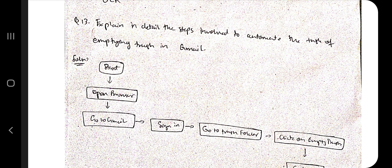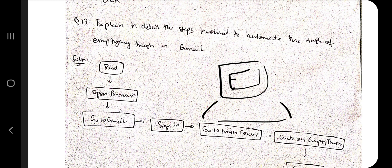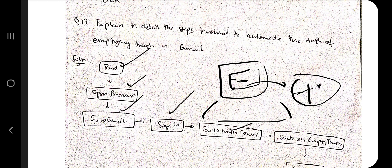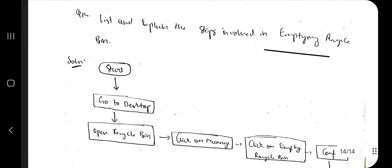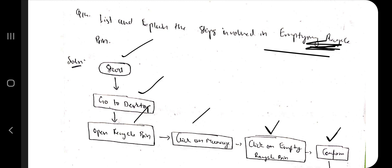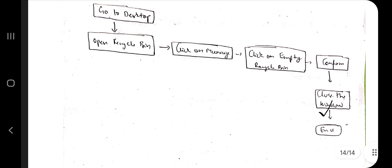The next question involves the steps for automating emptying Gmail trash. Steps: Start → Open browser → Go to Gmail → Sign in → Go to Trash folder → Click 'Empty Trash' → End. Similarly for emptying the Recycle Bin: Start → Go to Desktop → Open Recycle Bin → Click Manage → Click 'Empty Recycle Bin' → Click Confirm → Close window → End. Now let's see the practical version of these steps.